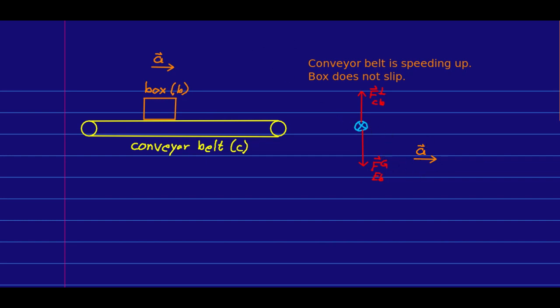The box is speeding up, and the only way that's possible is if there's a force here to the right. And there's only one force that can possibly be, because the only thing it's in contact with is the conveyor belt. So this must be the frictional force by the conveyor belt, and because it's not slipping, this is static friction.